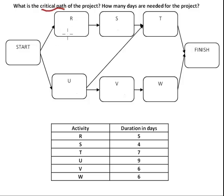R is 5, S is 4, T is 7, U is 9, V is 6, W is 6. So my question is, how many paths does this network have? Well, there are three paths.